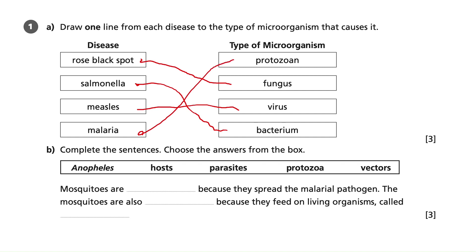Once you've completed the answer, go back through each one, checking to make sure you have done it correctly and haven't made any silly mistakes. Rose black spot — fungus, yes. Salmonella — bacterium, yes. Measles — virus, yes. Malaria — protozoan, yes. All those lines are very clear with no ambiguity, therefore we score all three marks.